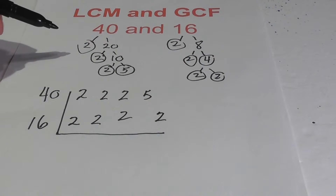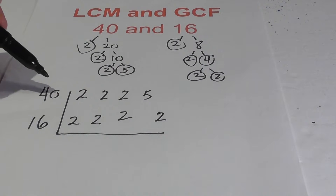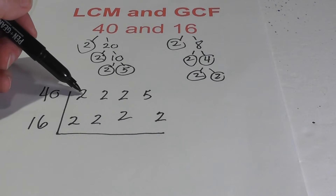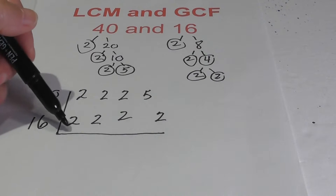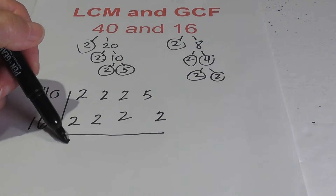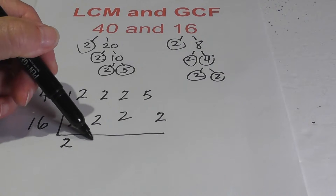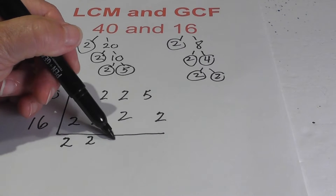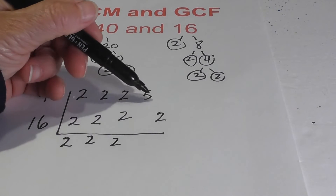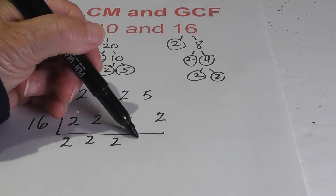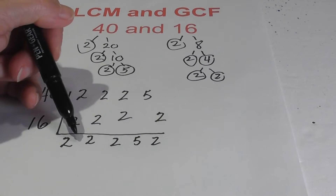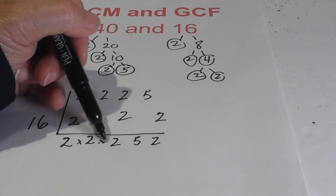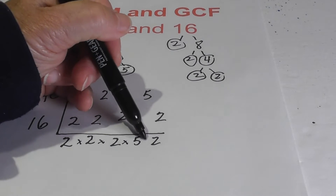Since you only have two numbers, if you have two numbers in the column you only bring down 1. So I'm going to bring down 1, bring down 1, bring down 1, bring down 1, obviously bring down 1. Then all you do is multiply all this together.